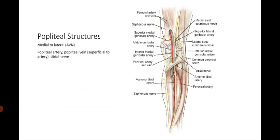For the popliteal structures, from medial to lateral, the mnemonic is AVN: artery first, then the vein in the middle, and finally the tibial nerve. Usually, the popliteal vein is more superficial to the artery.